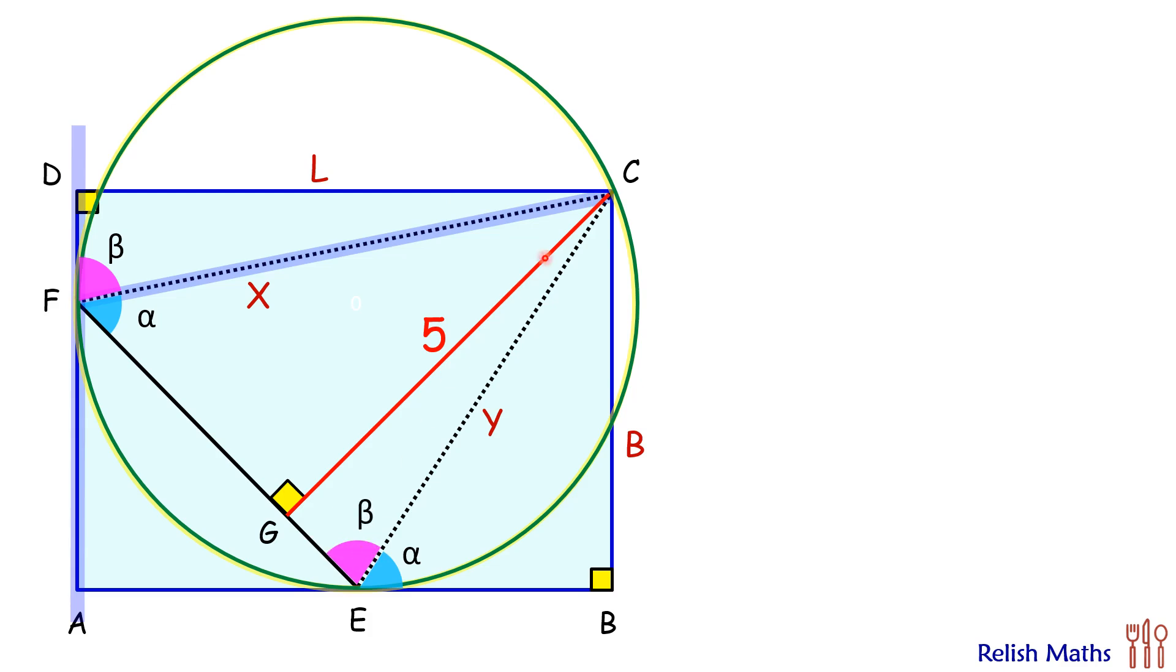Now if you look at triangle CFG and triangle CEB, here they have got angle alpha and a 90 degree angle. So by angle-angle similarity, the triangles are similar to each other and thus the ratio of sides will be equal.